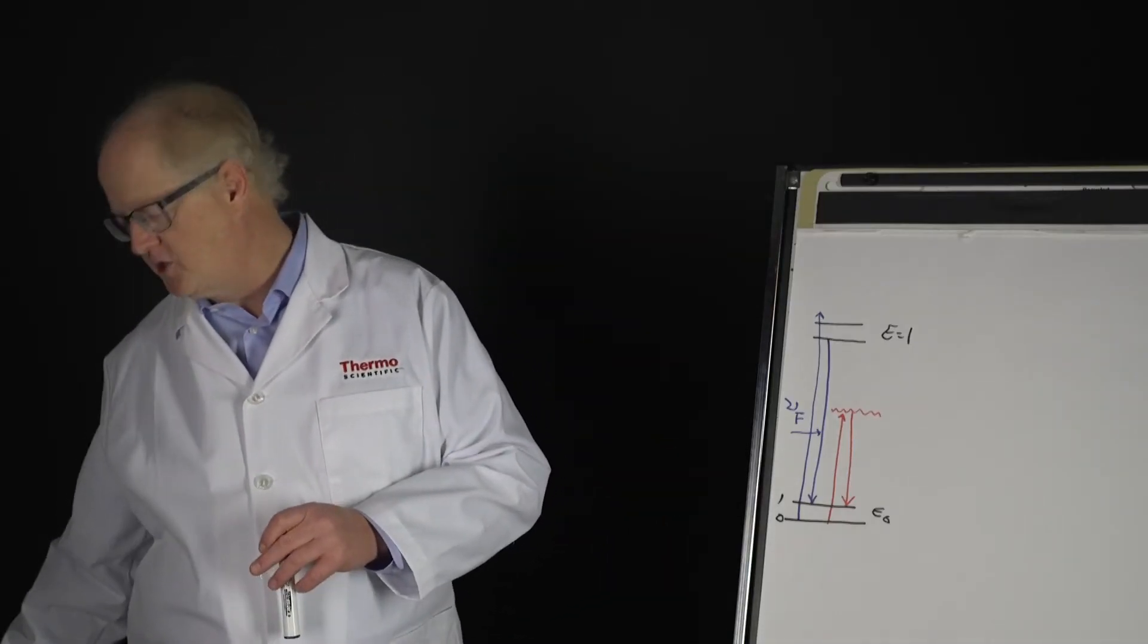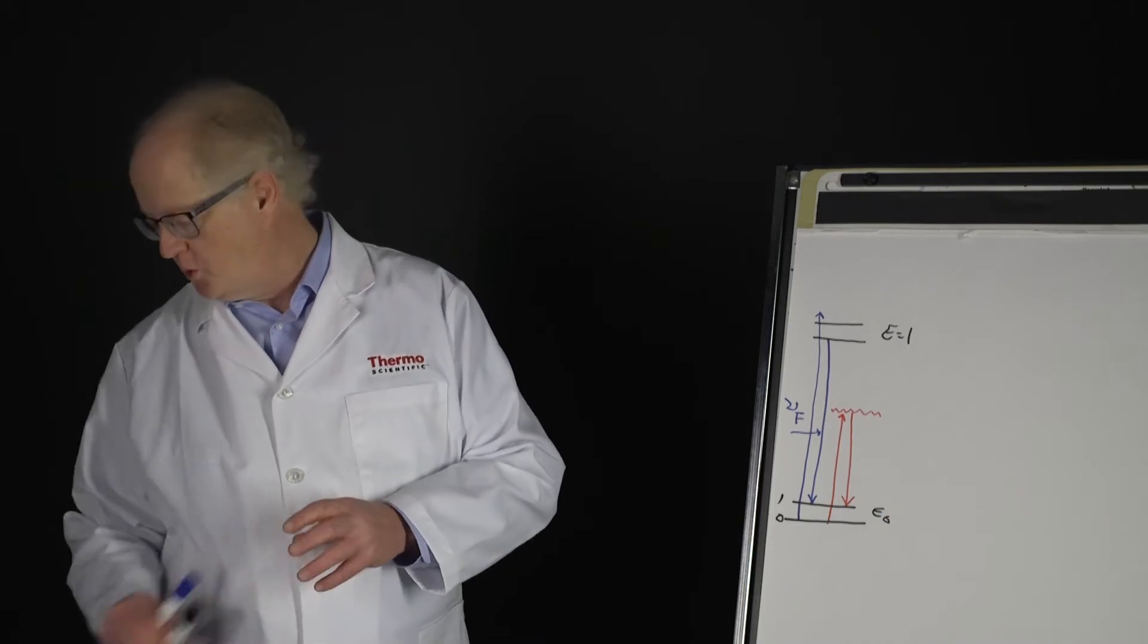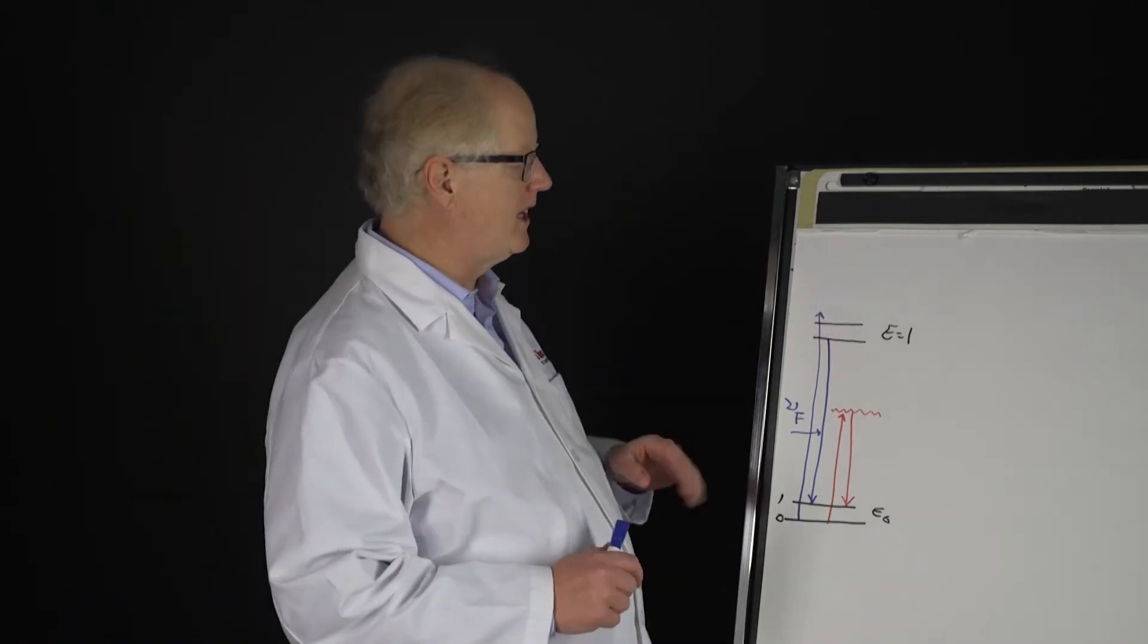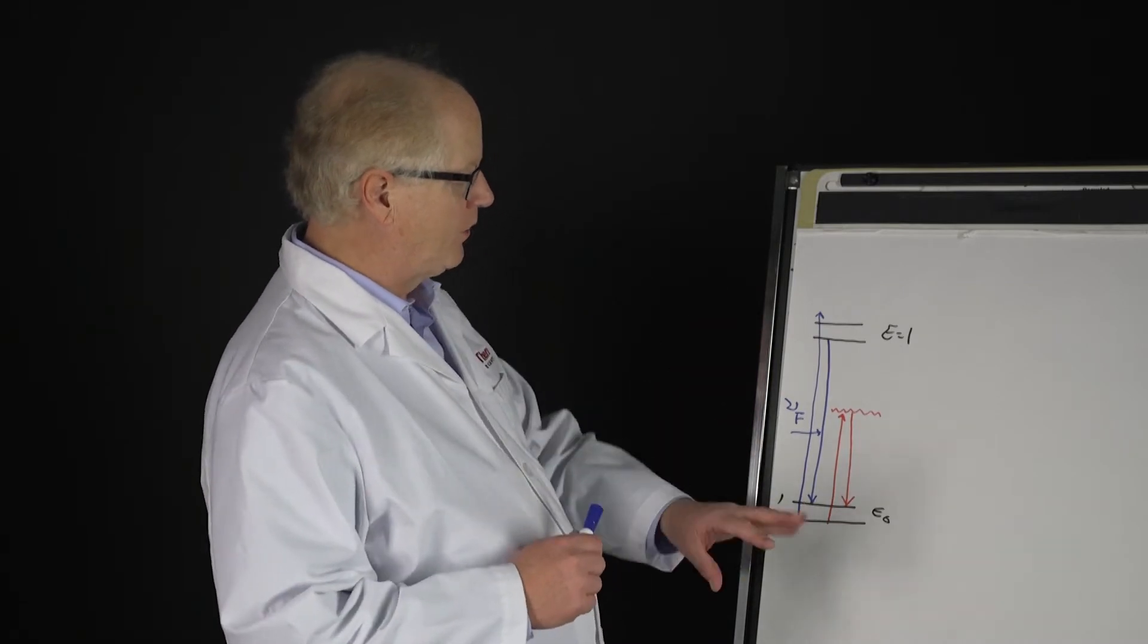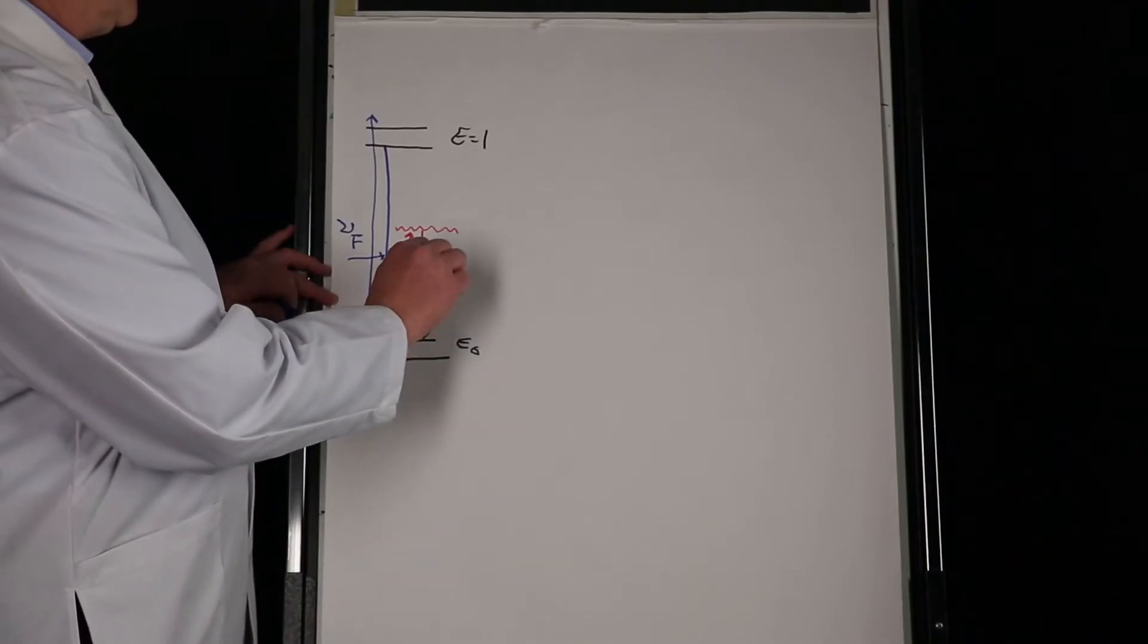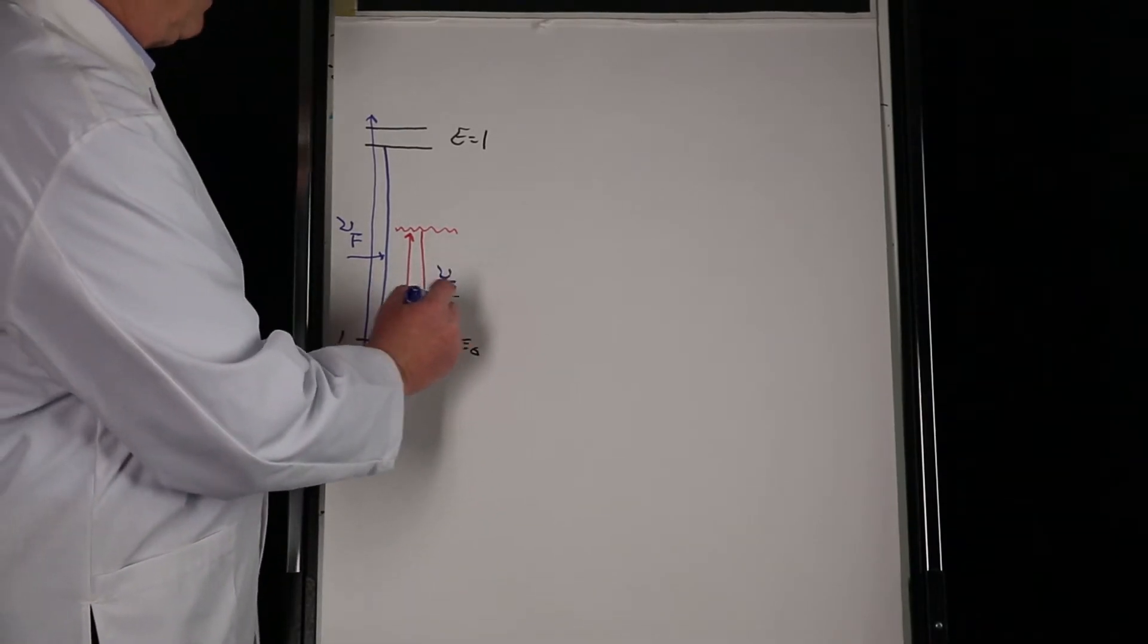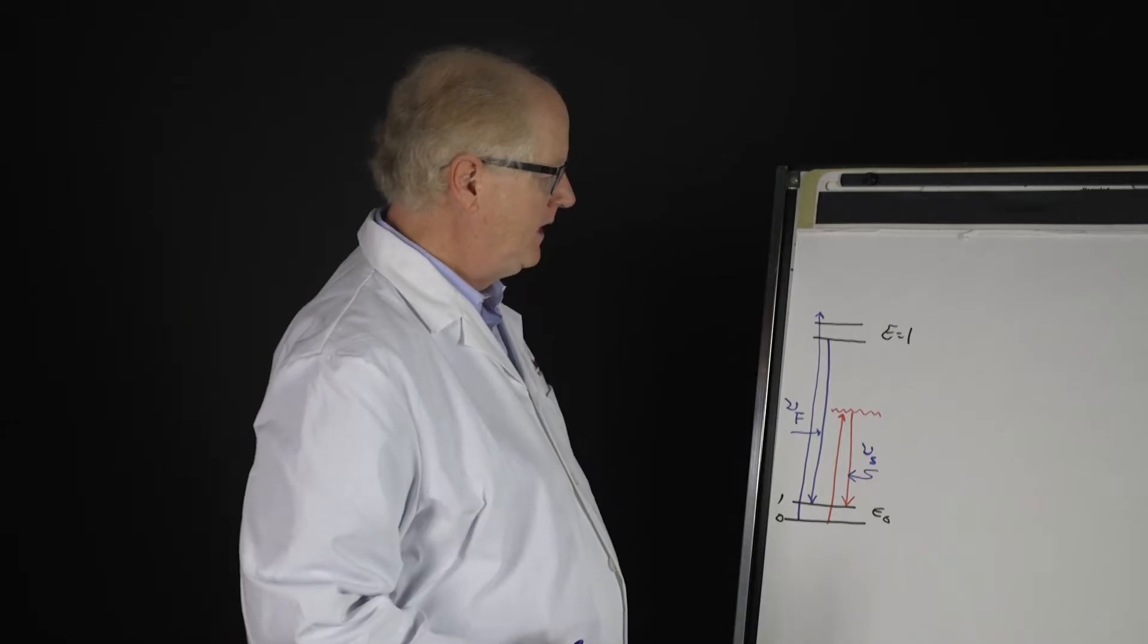You would not give the molecule sufficient energy to approach that excited electronic state and hence fluoresce. So the fluorescence photon wouldn't happen - you would just have your Stokes scatter that you've come to expect for the Raman.